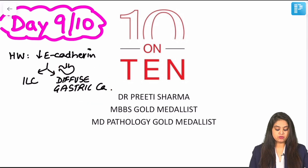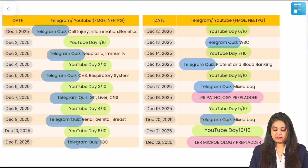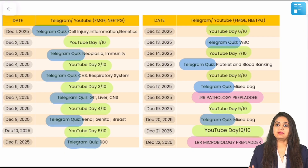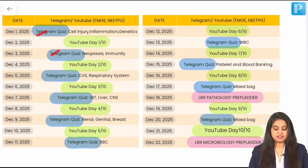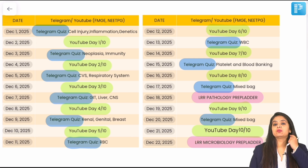If E-cadherin is not written, then the gene — CDH1 gene mutation — would be mentioned. By now, we have finished the majority of this timetable. All topic-wise Telegram quizzes have been done and dusted. The two LRRs for PATH and MICRO are also done.